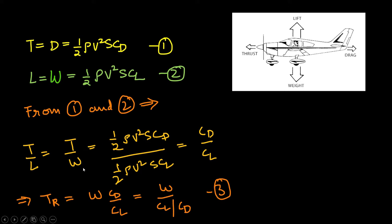So dividing thrust by weight, we get thrust by weight is equal to CD by CL. This can be written as thrust required equals W times CD upon CL. I have used 'thrust required' because for level flight the engine may be capable of producing extra thrust, but this is the amount of thrust required to overcome drag. So I am using the subscript R to represent thrust required, to differentiate it from thrust available. Thrust required equals W times CD over CL, which can be written as W divided by (CL/CD).